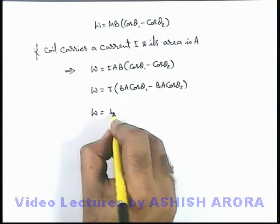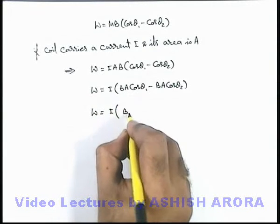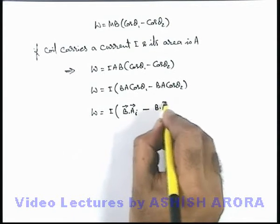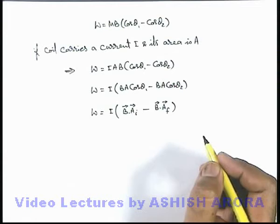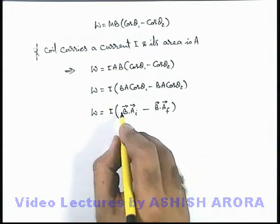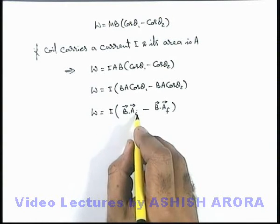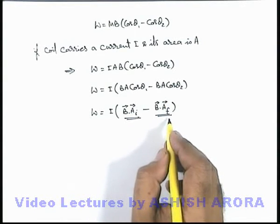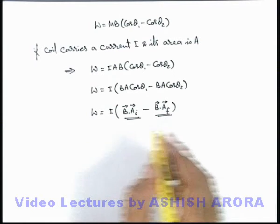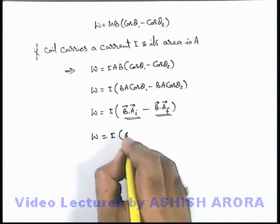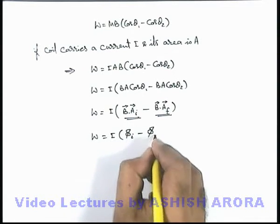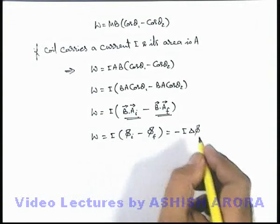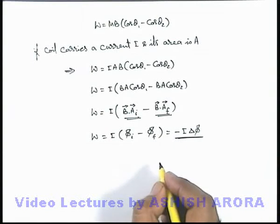This can be written as i multiplied by B·A in the initial situation minus B·A in the final situation. We know that the dot product of the magnetic induction with the area vector is defined as the magnetic flux. So the work done can be written as i times initial flux minus final flux, which equals minus i delta phi, where delta phi is the final flux minus the initial flux — the change in flux due to the orientation change.